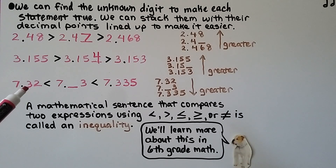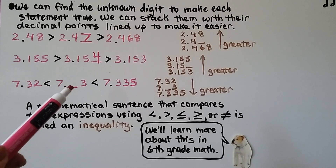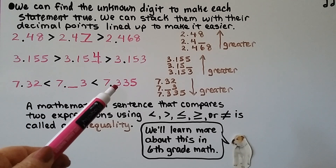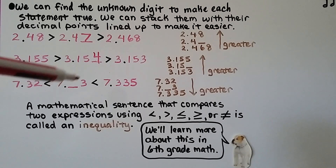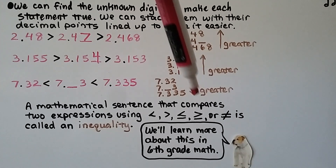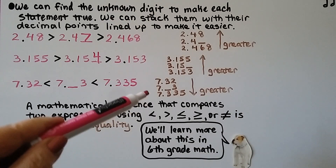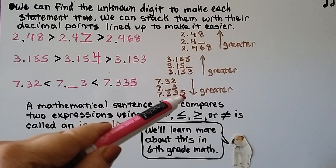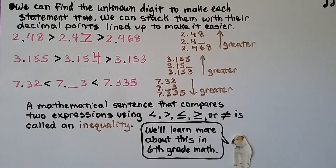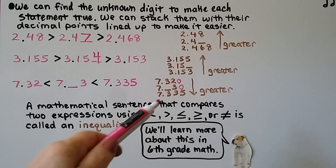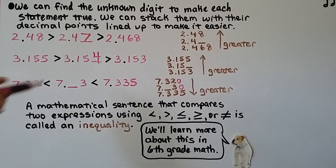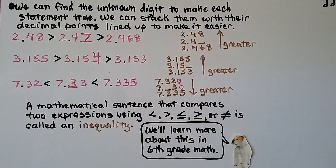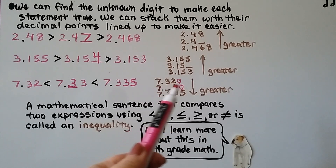For another example: 7 and 32 hundredths, then a decimal with a missing digit, then 7 and 335 thousandths, ordered from least to greatest. When stacked, one number has an extra digit. We can add placeholder zeros to help our eyes. In order for the middle decimal to be the greatest in that position, the missing digit must be a 3. Sometimes adding zeros to the end of decimals that have fewer digits can help us compare them.